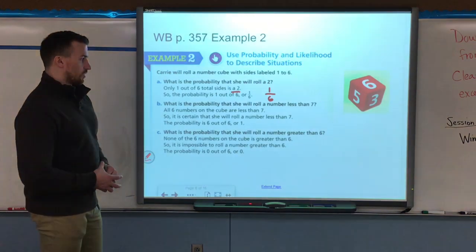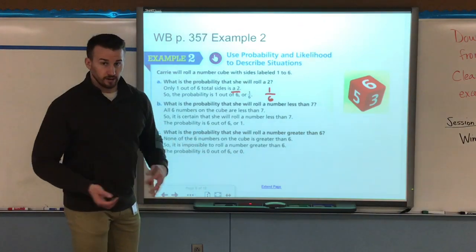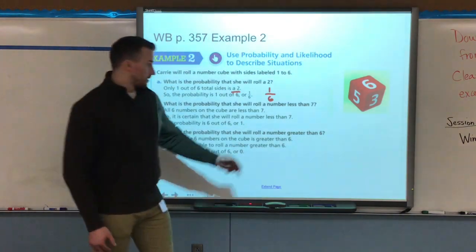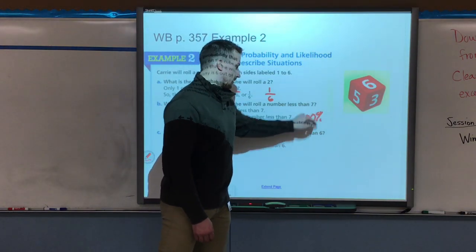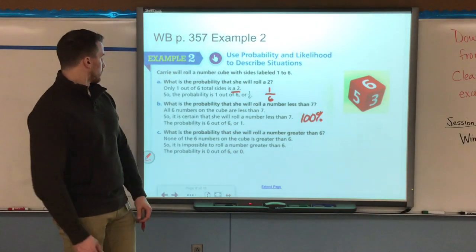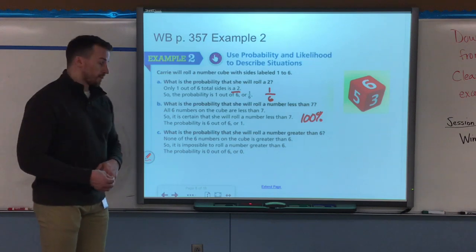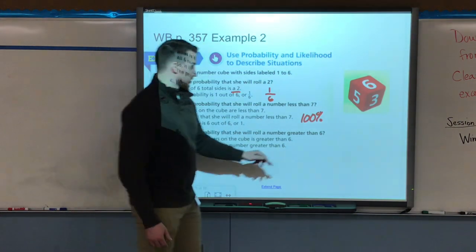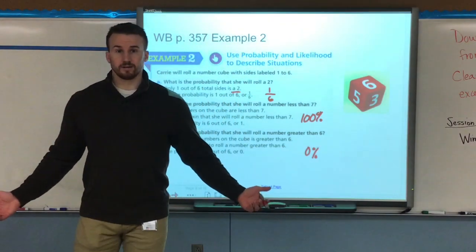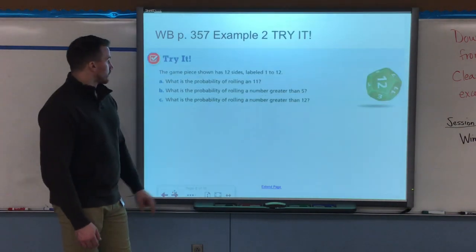Question B says what's the probability that she will roll a number less than seven? Well all six numbers on a number cube or die are less than seven, so you would say six out of six or one, or you could even write it as a percentage and say it's a 100% chance it's going to happen because everything is less than seven. Question C says what is the probability that she will roll a number greater than six? Well none of the numbers are greater than six, so we could say zero or zero percent chance or not likely at all.